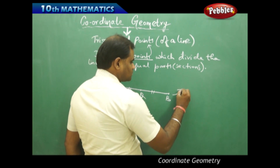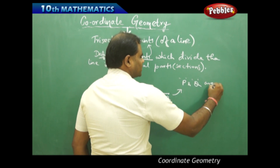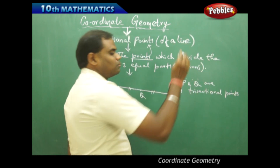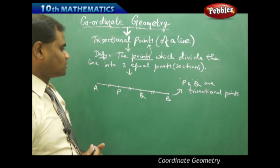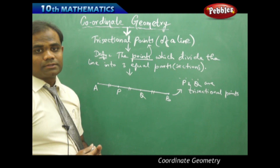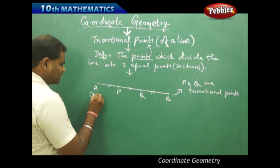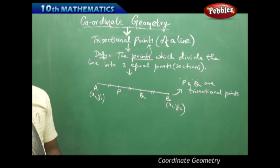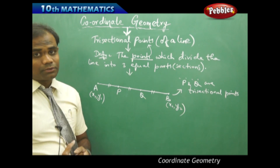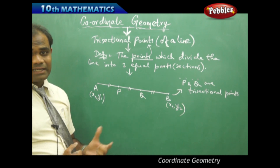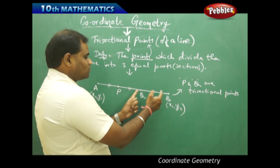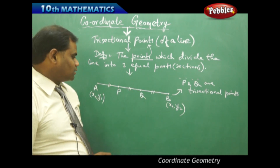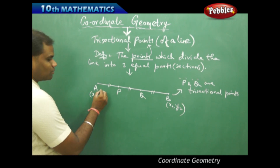So P and Q are the trisectional points. Say A is (x1, y1) and B is (x2, y2). I want to know in what ratio P divides AB and in what ratio Q divides AB. Clearly, AP = PQ = QB. Therefore, PB will be twice of AP. Because all three distances are equal, P divides AB in the ratio 1:2.